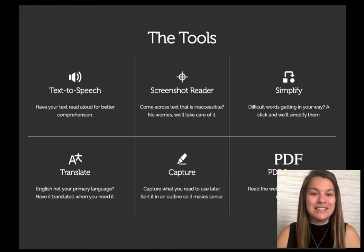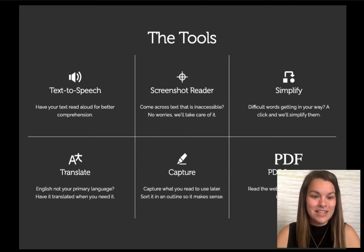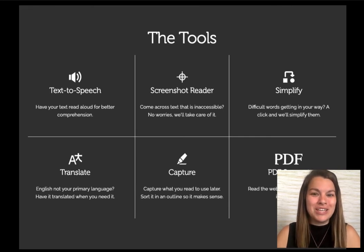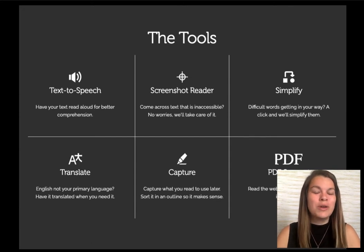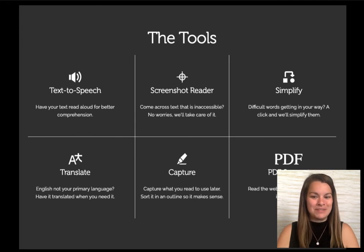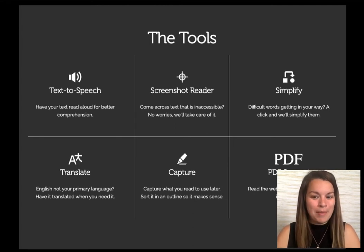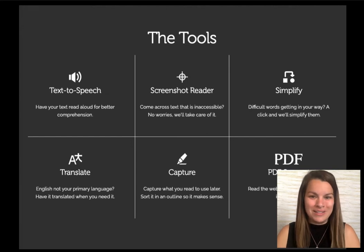Simplify — we can simplify the text with a push of a button. Translate — is English not your primary language? Translate will translate your text into your chosen language. Capture — you can mark up right on Snap and Read. And then PDF support: you can use this on the web and use all these tools within any PDF as well.